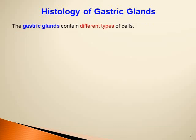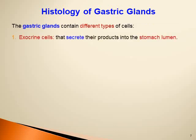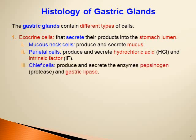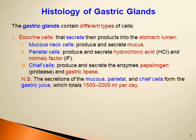To summarize, the gastric glands contain exocrine cells that secrete into the stomach lumen: mucus neck cells producing mucus, parietal cells producing hydrochloric acid and intrinsic factor, and chief cells producing pepsinogen and gastric lipase. The secretions of mucus, parietal, and chief cells form the gastric juice, totaling about 1.5 to 2 liters per day.